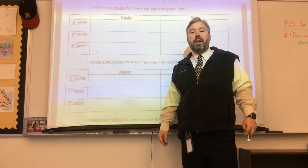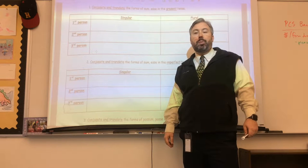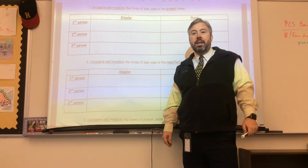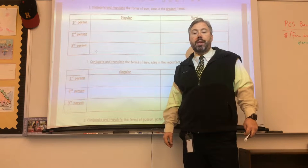Hey folks, today we're going to be learning about the imperfect tense using the irregular forms of to be, which are esse, and the irregular forms of posse, which means to be able.